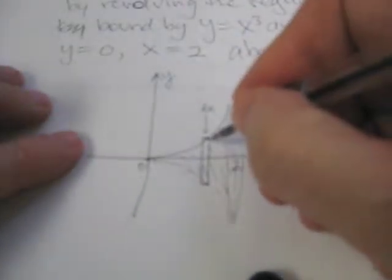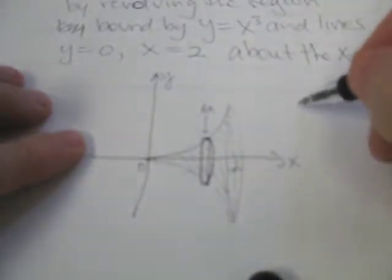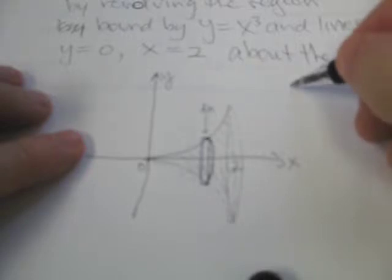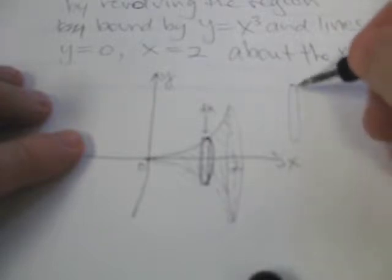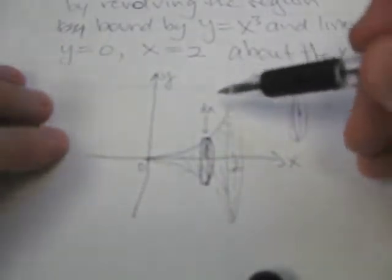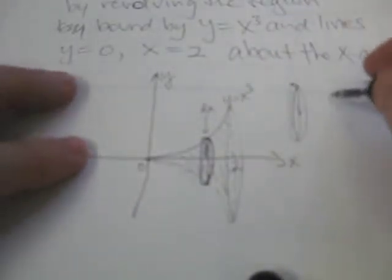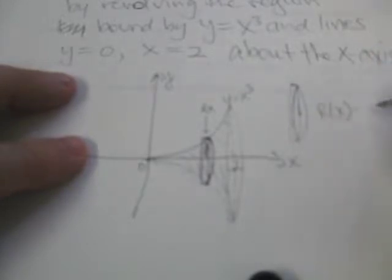Now, you all know that a disk is circular, and if you look at the radius, so we end up with our disk, it has a radius. Now, the radius here is going to be from the x-axis to the function, and the function is x cubed, so let's call the radius r of x to be the x cubed, for each value of x.